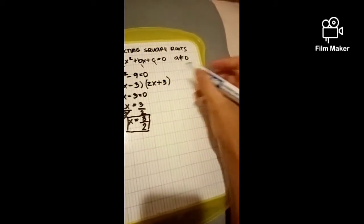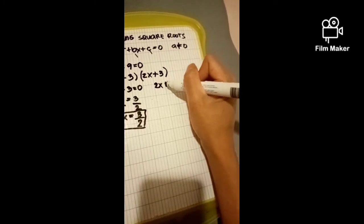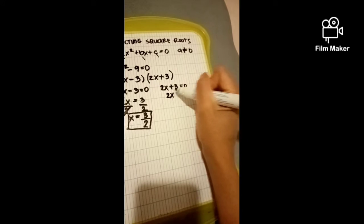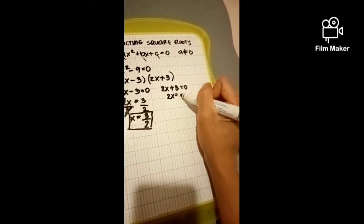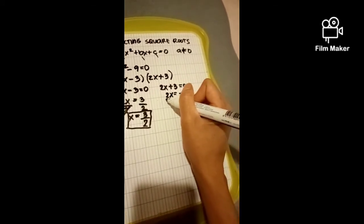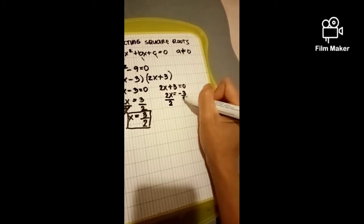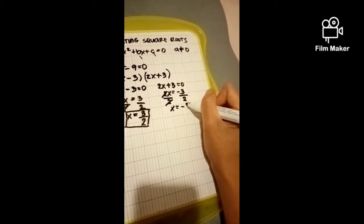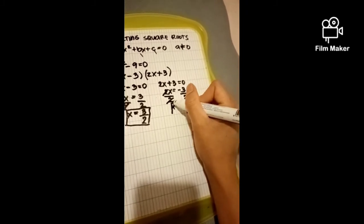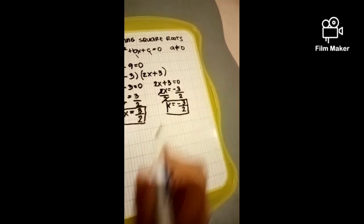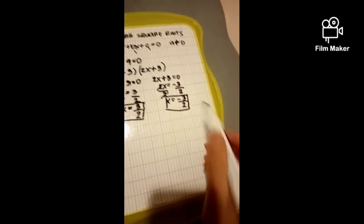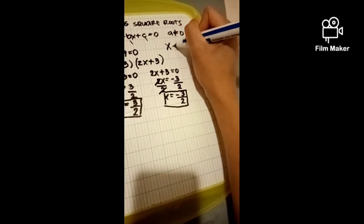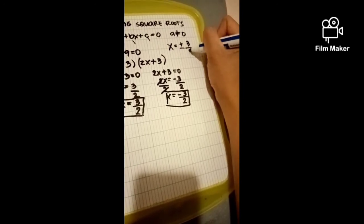Let's proceed to the other factor: 2x plus 3 equals 0. Using the same procedure, we move the 3 to the other side of the equal sign, where it becomes negative 3. Then we eliminate the 2 by dividing both sides, giving x equals negative 3 over 2.